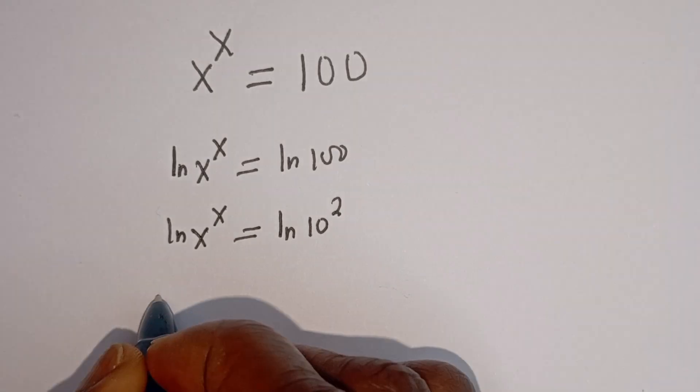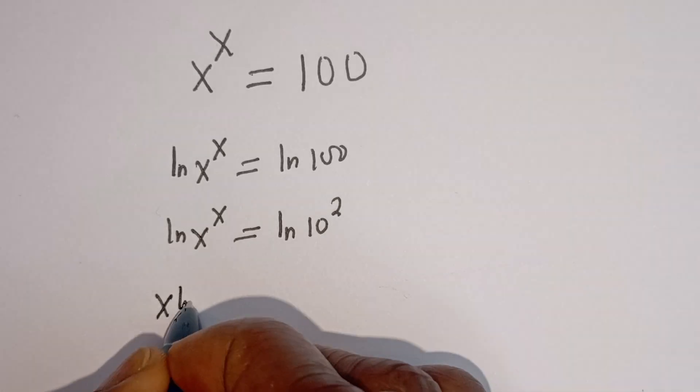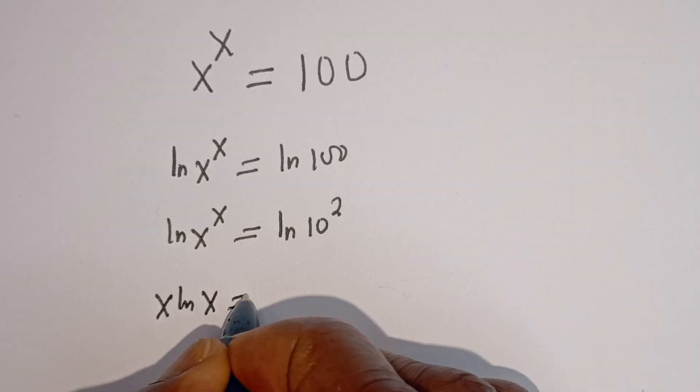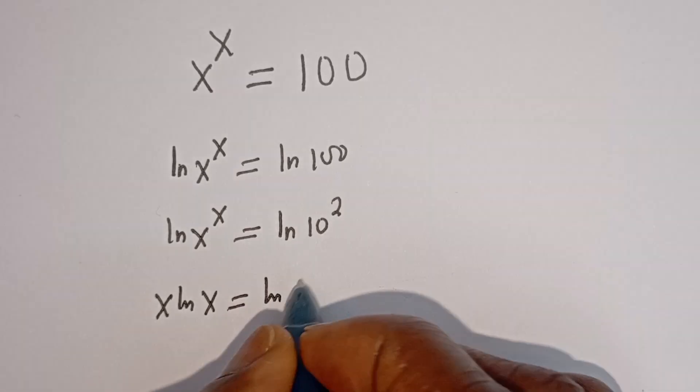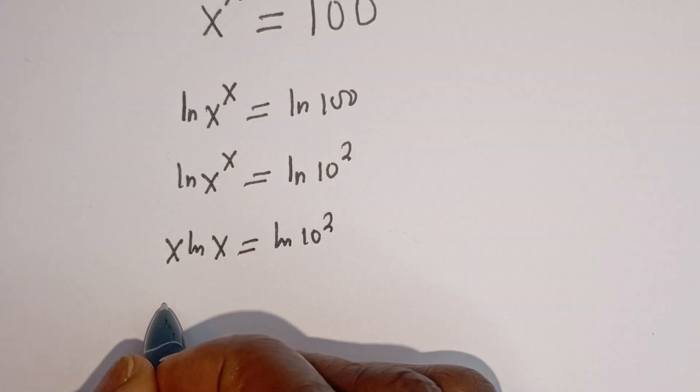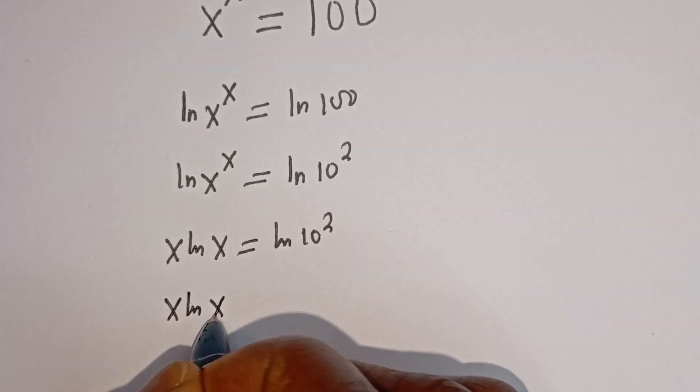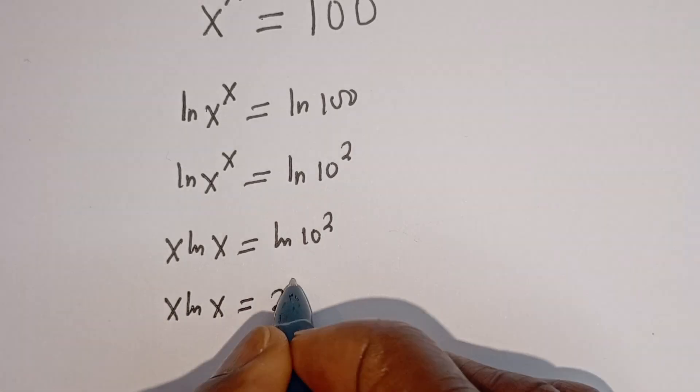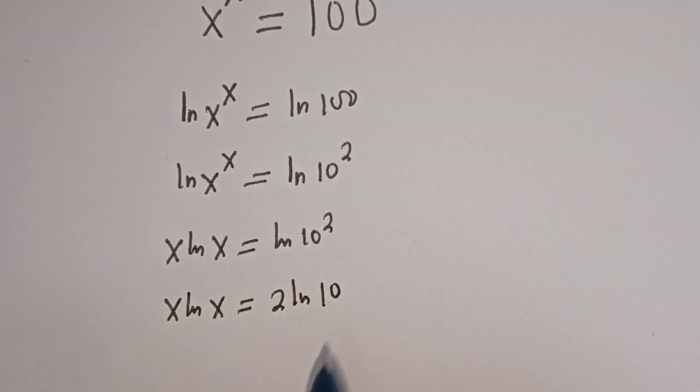Then we have S ln of S. This is equal to ln of 10 squared. Then here we have X ln of S is equal to 2 ln of 10.